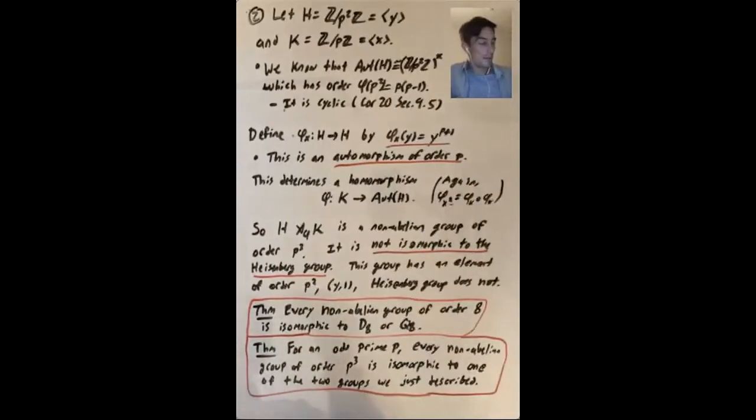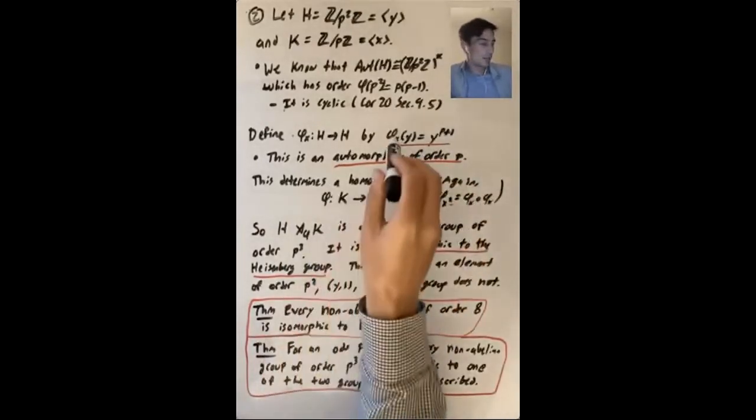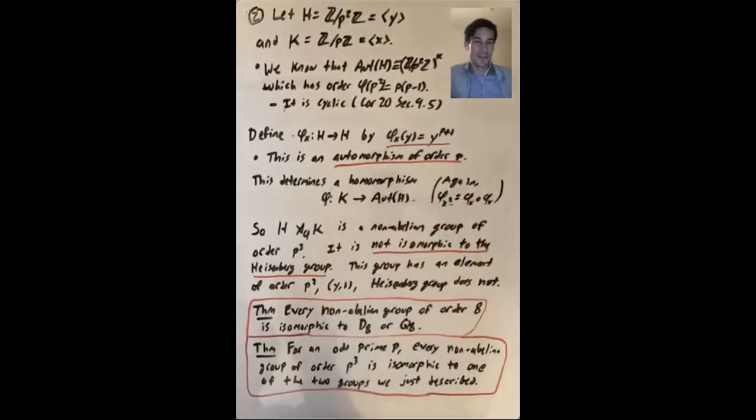So phi of x following phi of x following phi of x p times is the identity automorphism of H. So that's a little exercise that you can check.